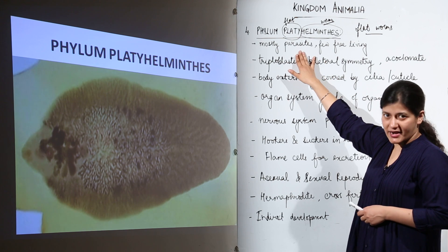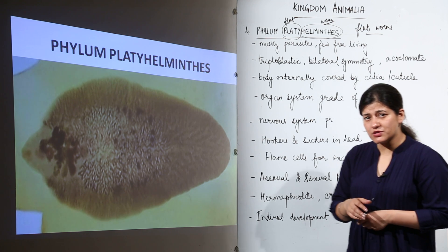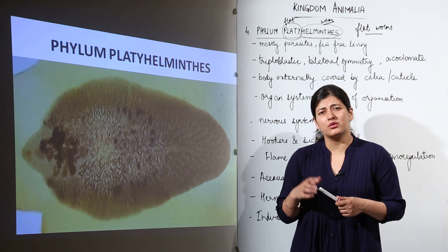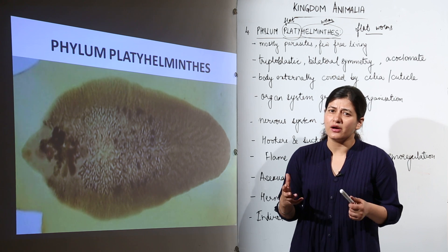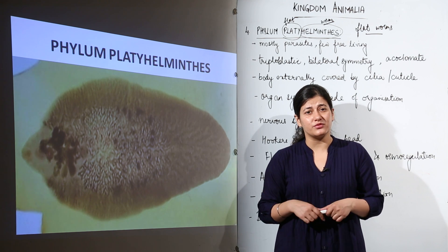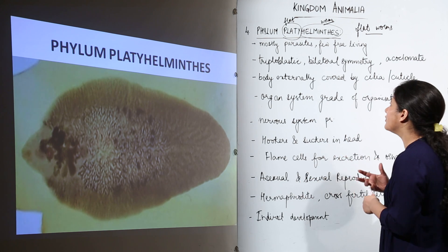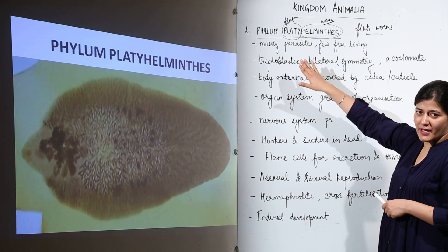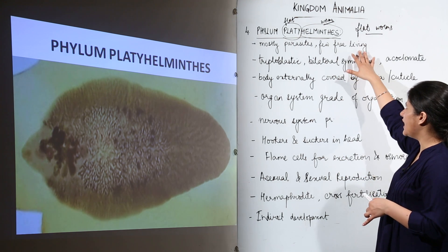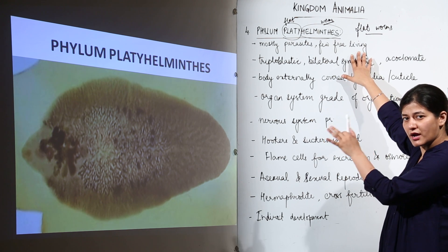Platyhelminthes are mostly parasitic on other animals. In humans, many platyhelminths are parasitic — for example, Schistosoma, which is very prominently found and infects the human body, causing dysentery and as many as 25,000 deaths. Those that are free-living are mostly aquatic. So we have aquatic free-living platyhelminths, and the rest are mostly parasitic.